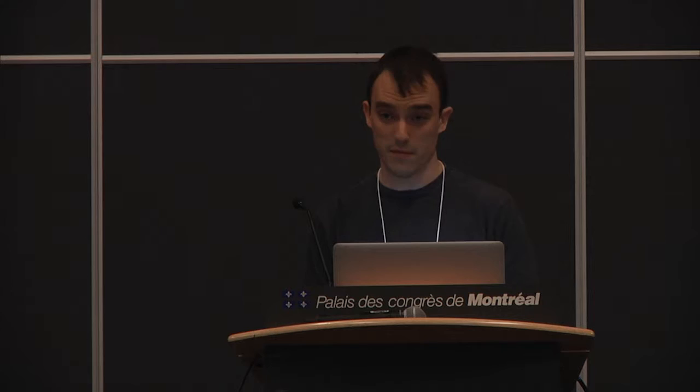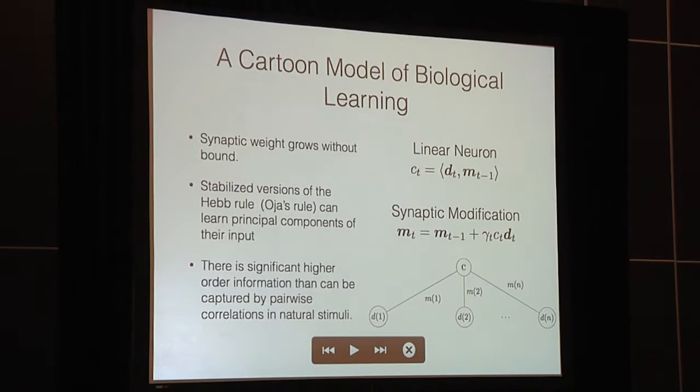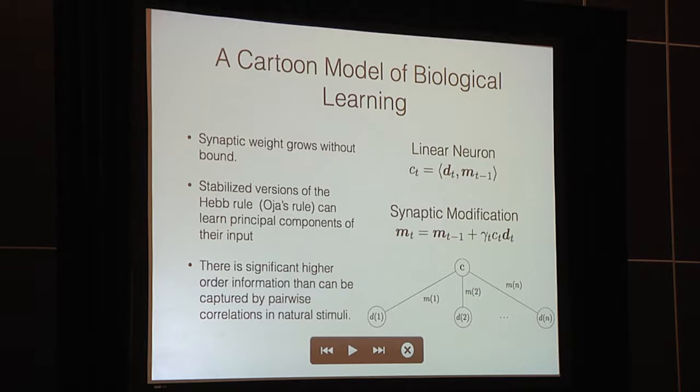Putting machine learning and neurobiology together is one of the original motivators for this conference. The first theoretical model for learning in the brain comes from Hebb, whose learning rule is frequently stated as 'cells that fire together wire together.' You can construct a toy model for a neuron based on this idea: a linear neuron with activity as a linear function of input data D and synaptic weights M. For Hebb, synaptic modification is in the direction of input D, scaled by the neuron's activity level. In this toy model, synaptic weights grow without bound, but stabilized versions can learn principal components of the input.